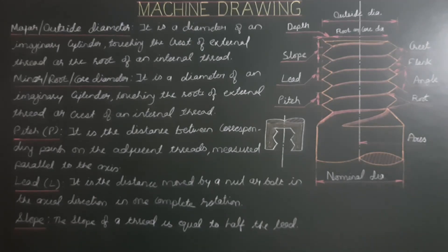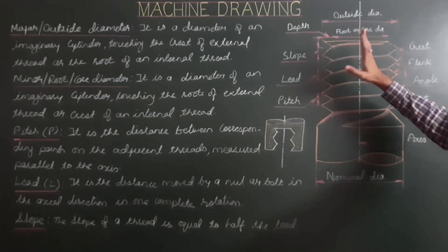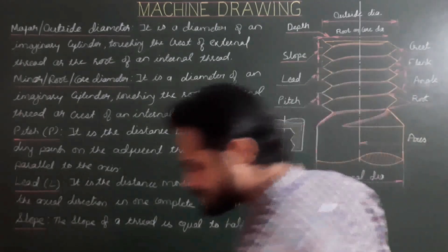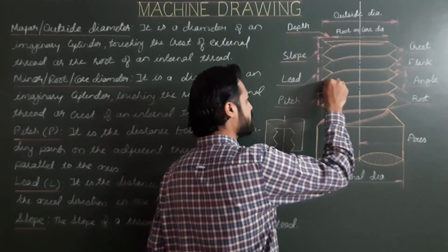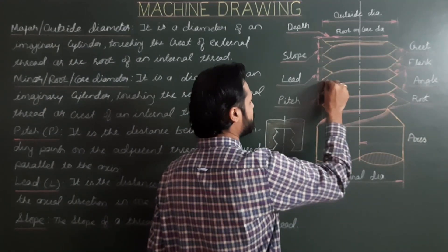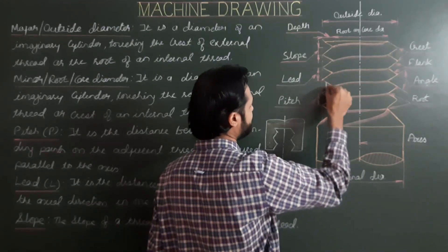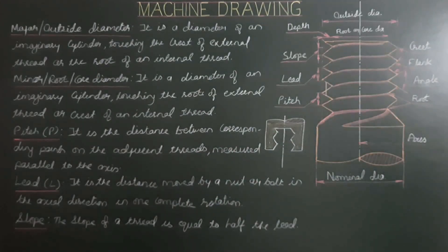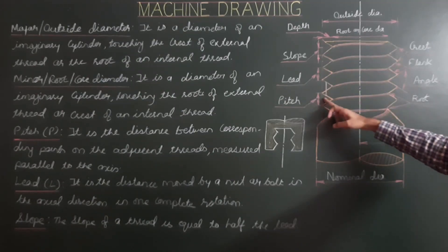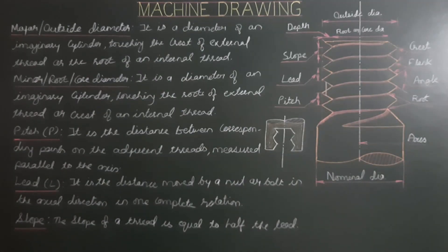Pitch is the distance between corresponding points on adjacent threads, measured parallel to the axis — from crest to crest or from root to root. You can also measure from a point on one flank to the corresponding point on the adjacent thread. All these give the same value — this length parallel to the axis is the pitch.